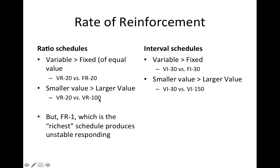This relationship sometimes depends. For interval schedules, a variable interval generally produces higher rates than a fixed interval. So a VI-30 will be higher than an FI-30, and a smaller value again produces higher rates — a VI-30 will generally produce higher rates than a VI-150.